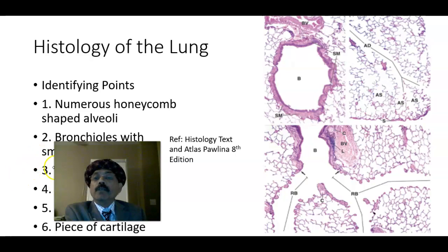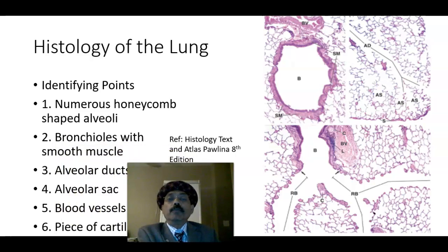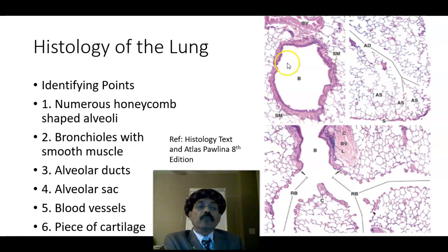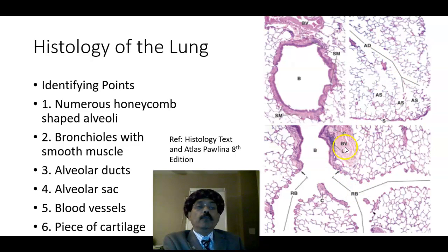Hello, my name is Dr. D1 S. Raja. Today I will discuss the histology of the lung. The identifying points include numerous honeycomb-like lung alveoli, bronchioles with smooth muscle, terminal bronchioles, respiratory bronchioles, alveolar duct, and occasionally cartilages of the bronchus, blood vessels, and lymphatics.